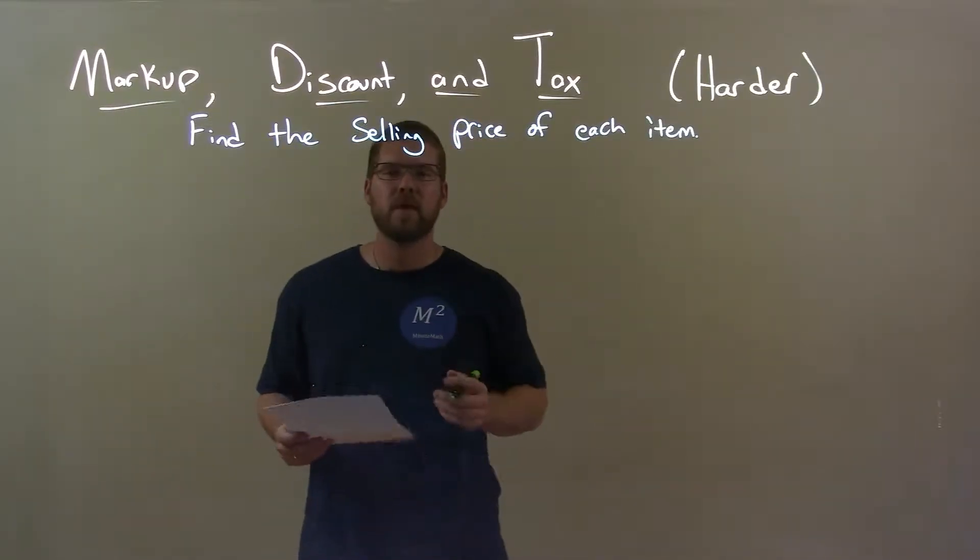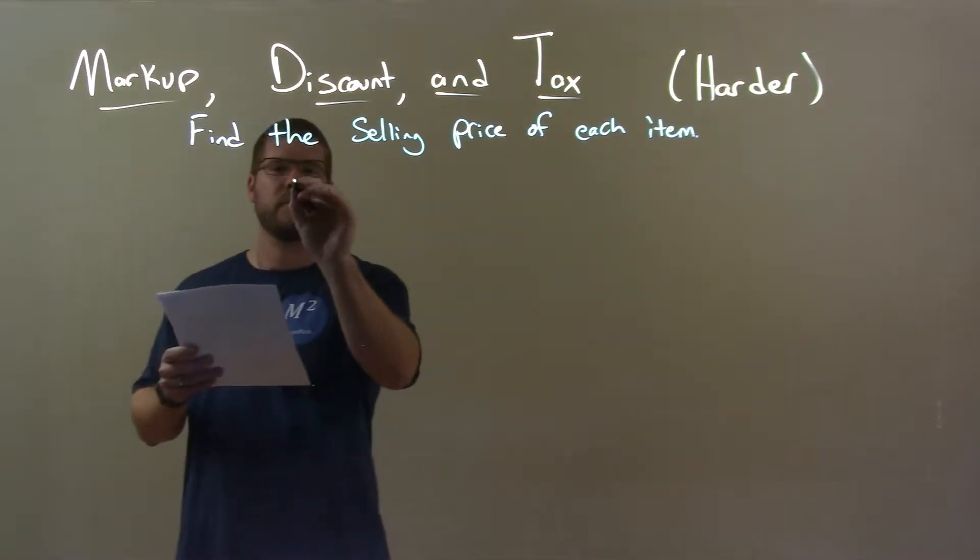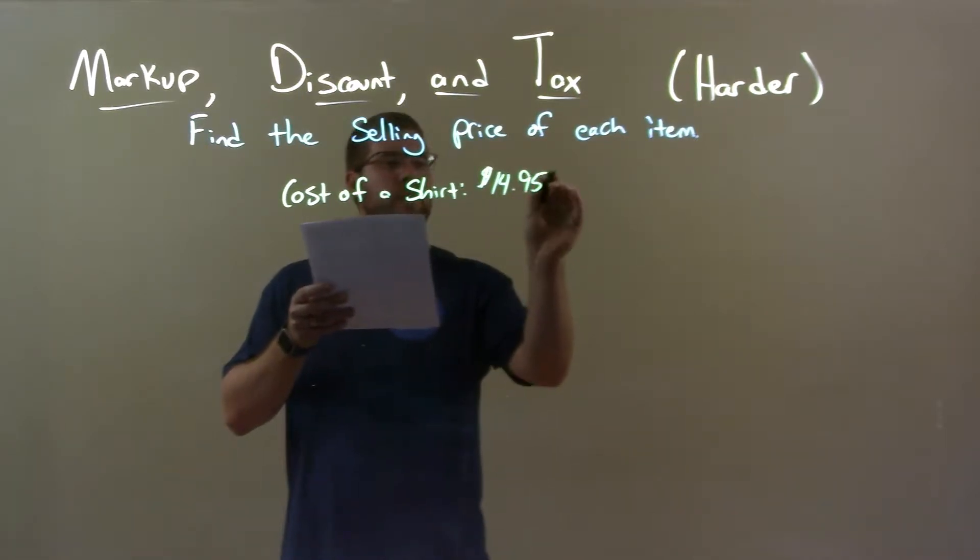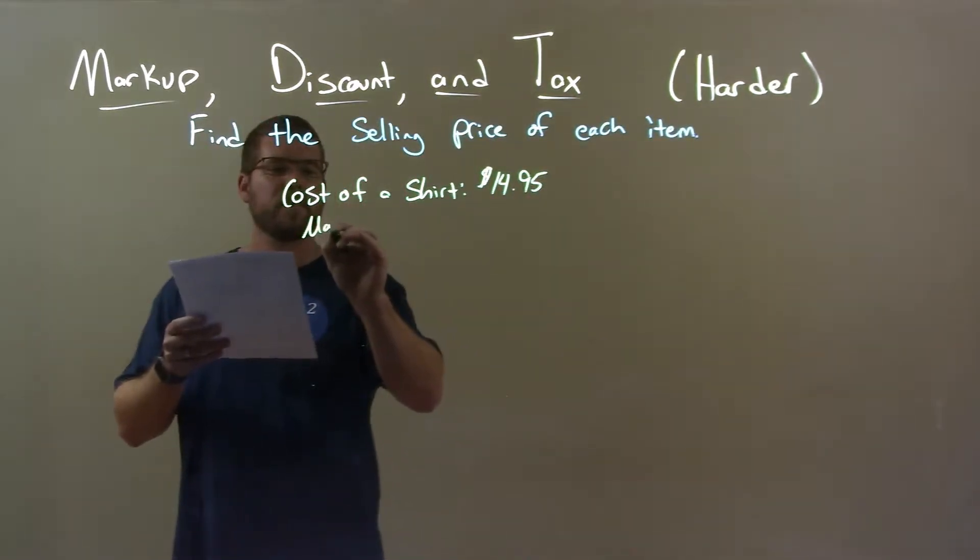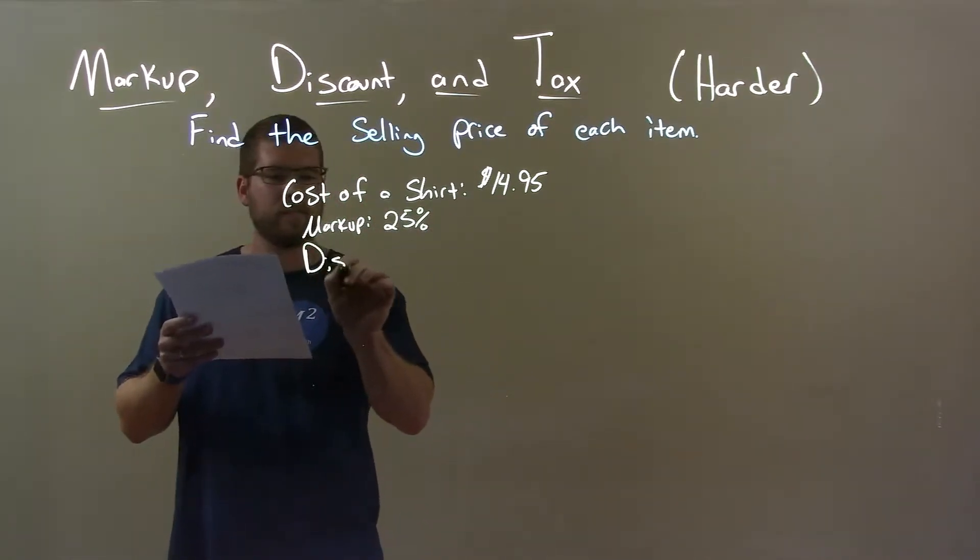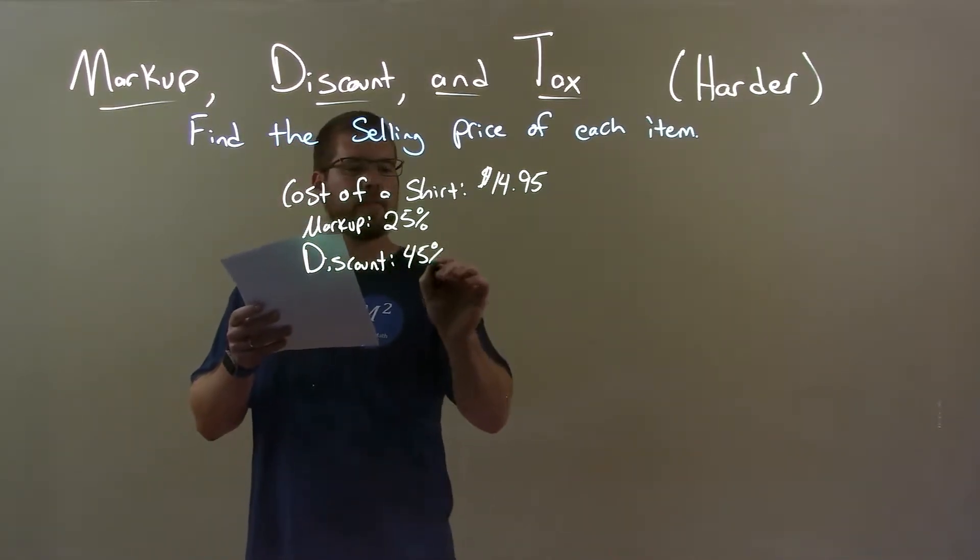Hi, I'm Sean Gann, and this is MinuteMath, and today we're learning about markup, discount, and tax. Find the selling price of each item. So, if I was given this item, the cost of a shirt is $14.95. Its markup is 25%, and its discount is 45%.